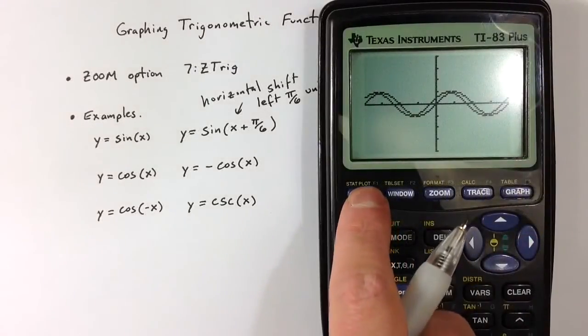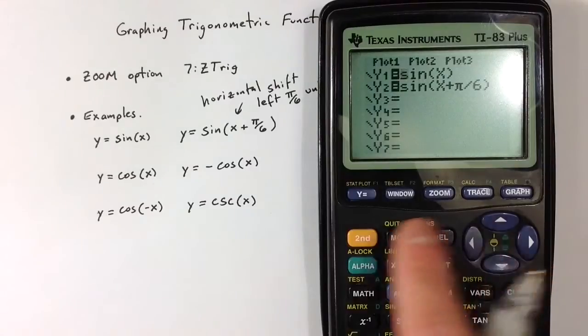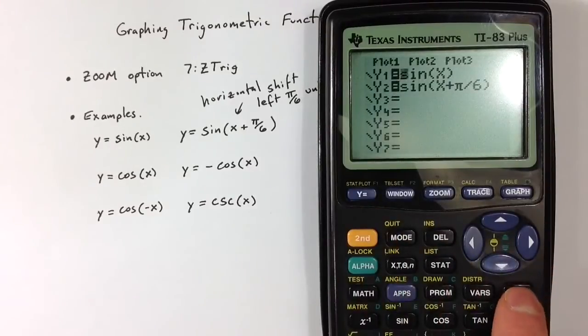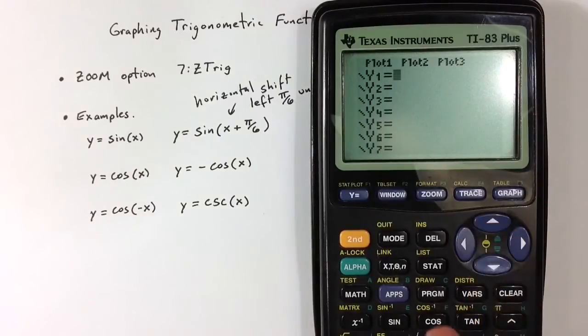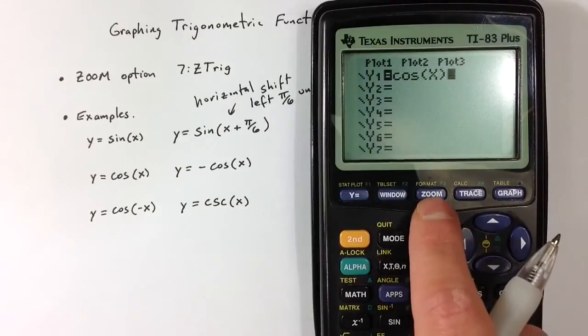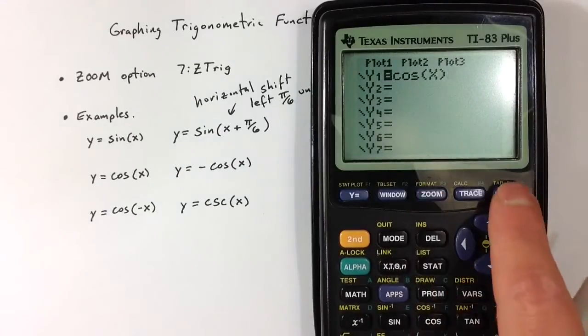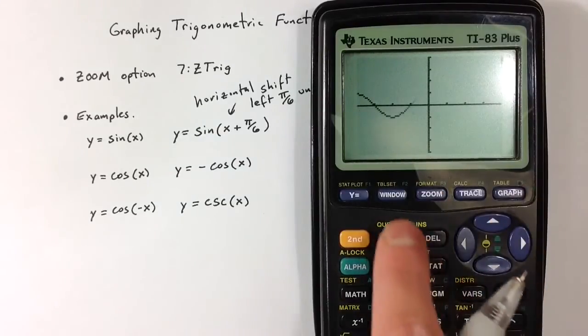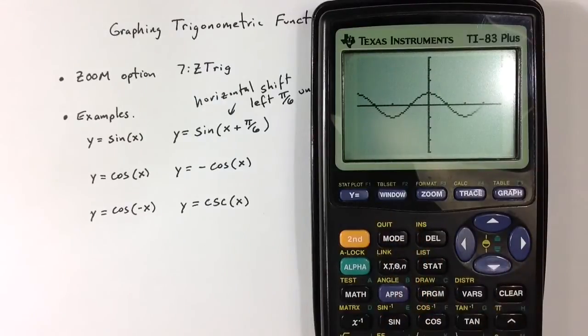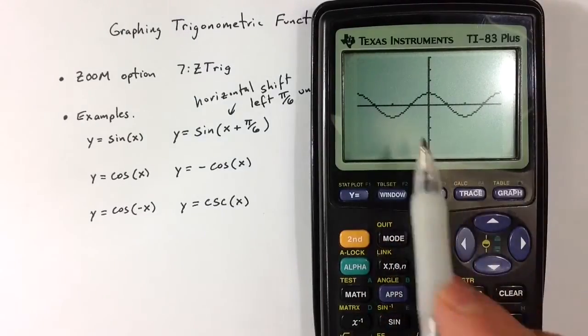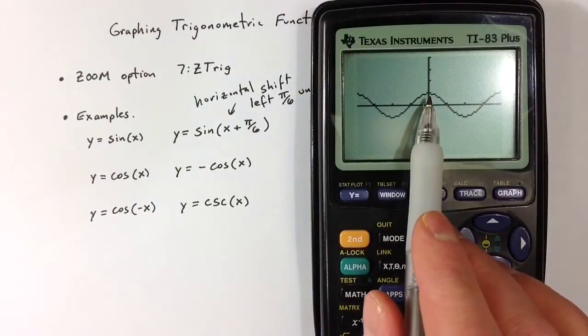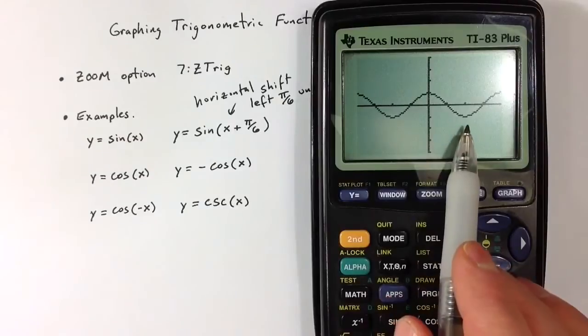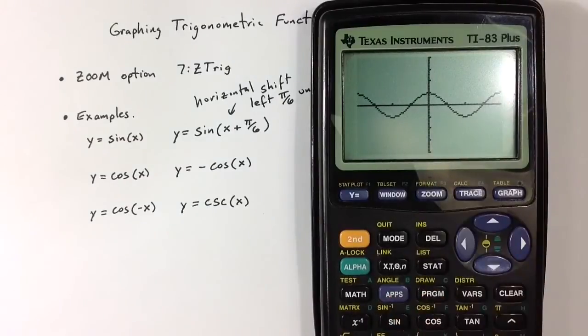Let's take a look at a different type of graph. So going back to the y equals menu, I can hit clear to get rid of the graphs that are there. And if we just take a look at the cosine function, the basic cosine function, again, in the zoom trig option, where the window is set to the zoom trig settings, we see essentially two cycles of the cosine graph. Cosine starts at 1 is the value when x equals 0, and then it goes down to negative 1 and back up to positive 1.